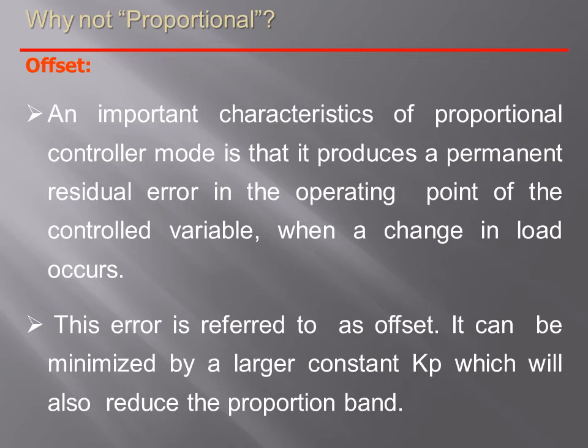Proportional control mode is not used alone in practical applications because of the offset problem. An important characteristic of proportional control mode is that it produces a permanent residual error in the operating point of the control variable when a change in the load occurs. This error is referred to as an offset. It can be minimized by keeping the constant kp larger, which will also reduce the proportional band. But to avoid this residual error, the proportional controller is not used alone.